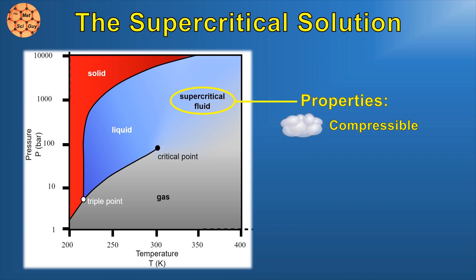A supercritical fluid has both liquid and gas-like properties. It is compressible like a gas, but has high density and can solvate more like a liquid. That solvating power is what can be exploited to dry our gel in a non-destructive way.